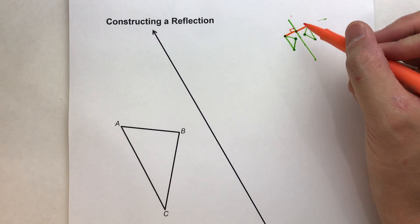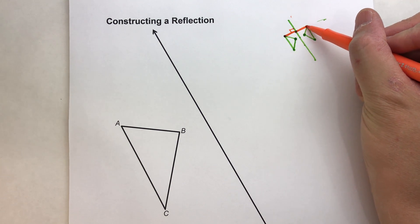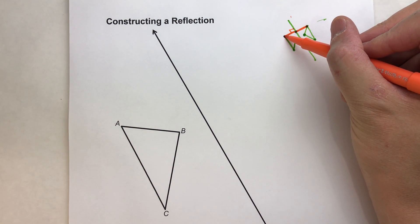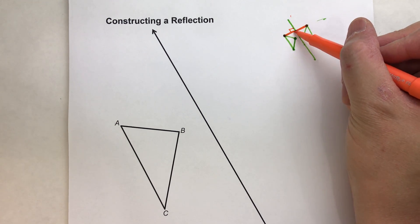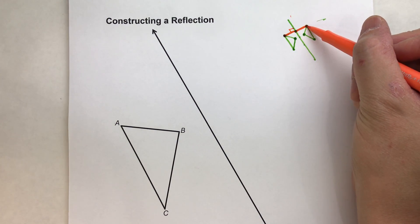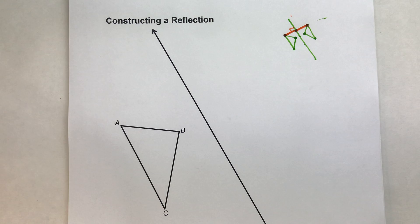So what we're going to have to do is we're going to have to construct a perpendicular through this point to the other side, and then use our compass to take this same distance and measure it out on the other side. So let's do that.